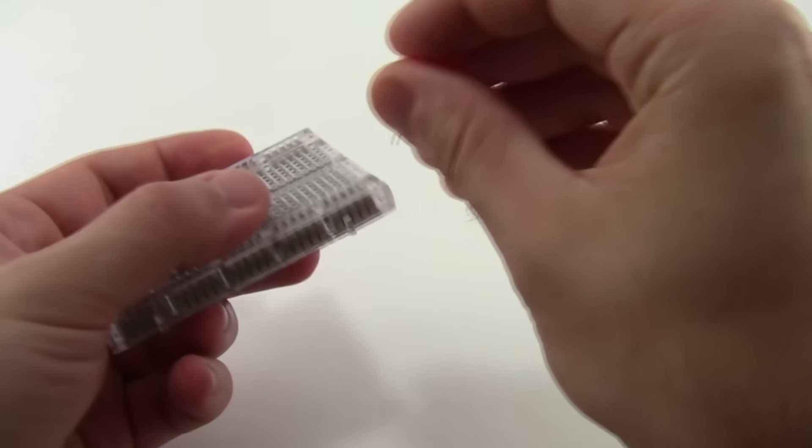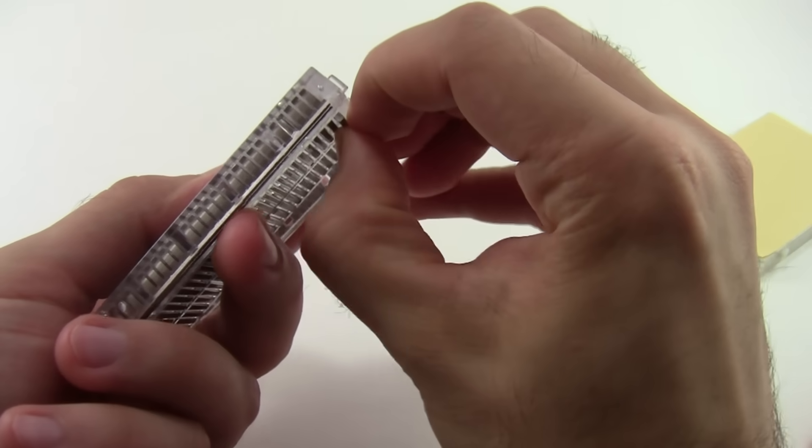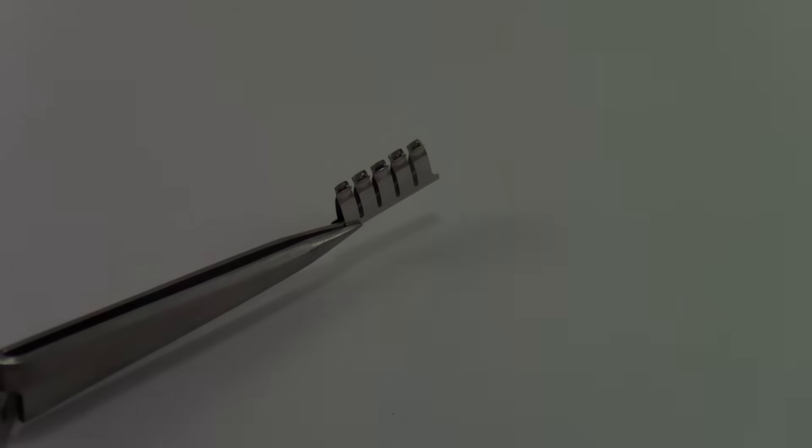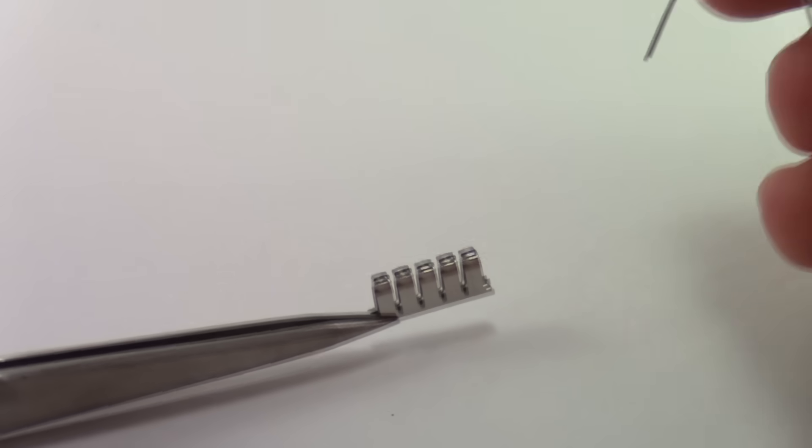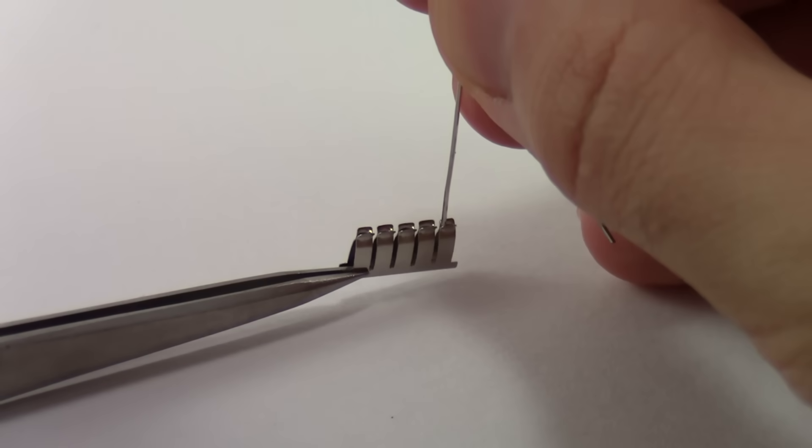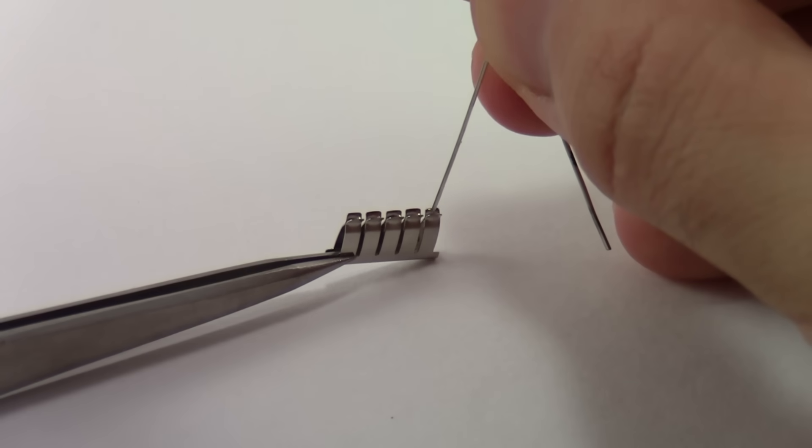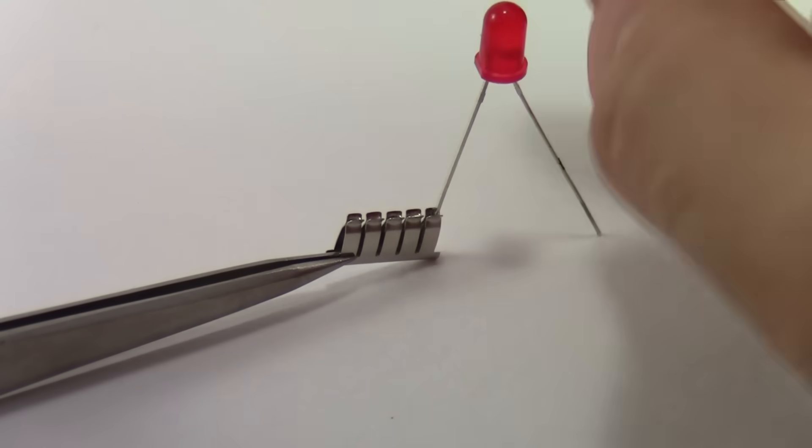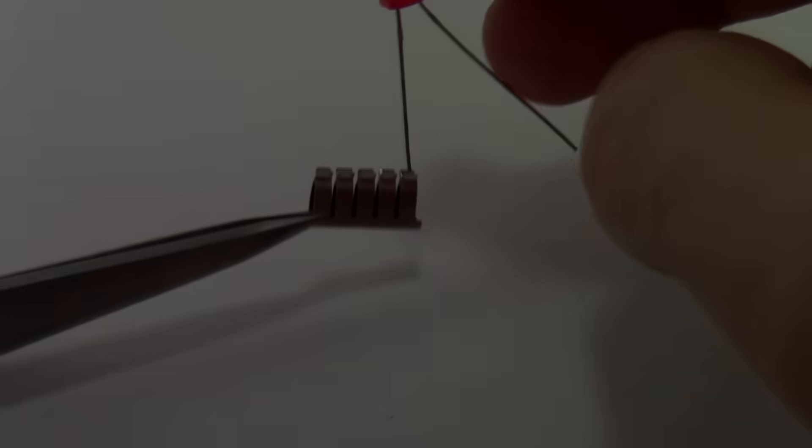We can remove one of these metal strips by pushing it out from the front to see what it looks like up close. Each strip is a series of five clips that line up with the holes on the breadboard. When you push a component into the breadboard, these clips are what's actually grabbing onto the leads, like you can see here with this LED.